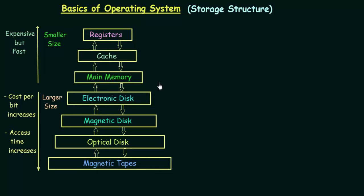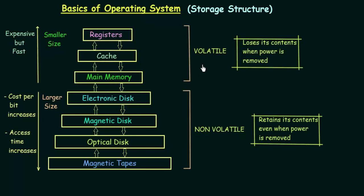That is why you hear that when you have more RAM, your computer performs faster. Main memory is volatile as compared to secondary memory, which is non-volatile. Volatile means that it loses its contents when the power is removed. Devices like main memory, cache, and registers are volatile — when power is switched off, whatever was stored in these devices will be erased.